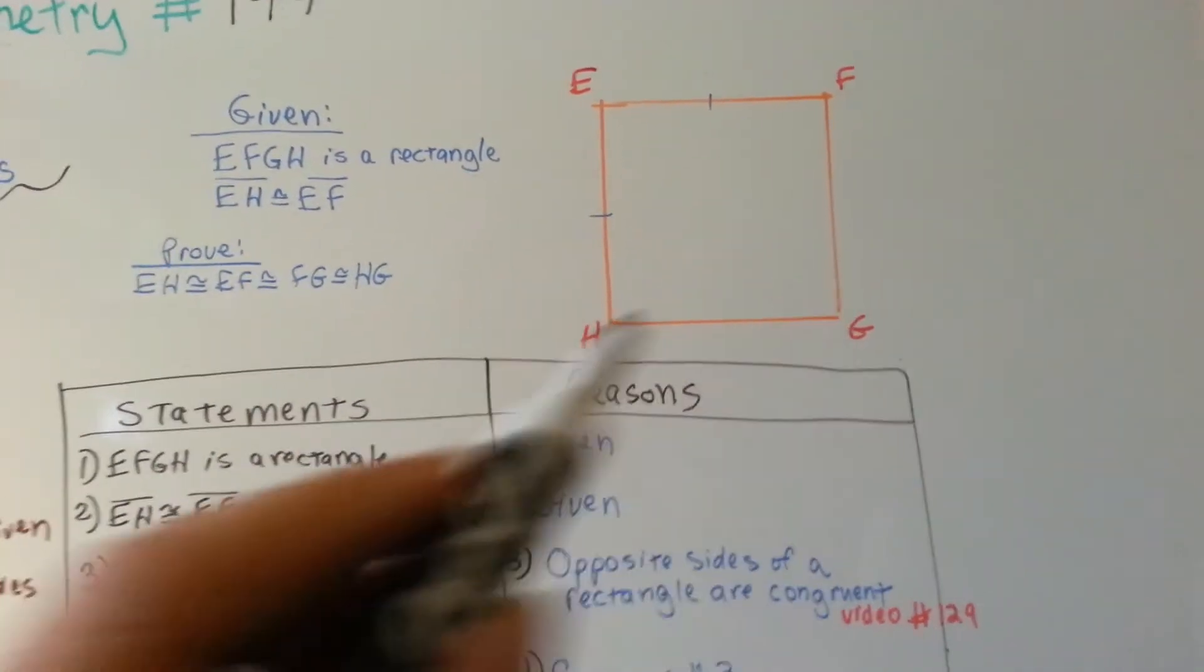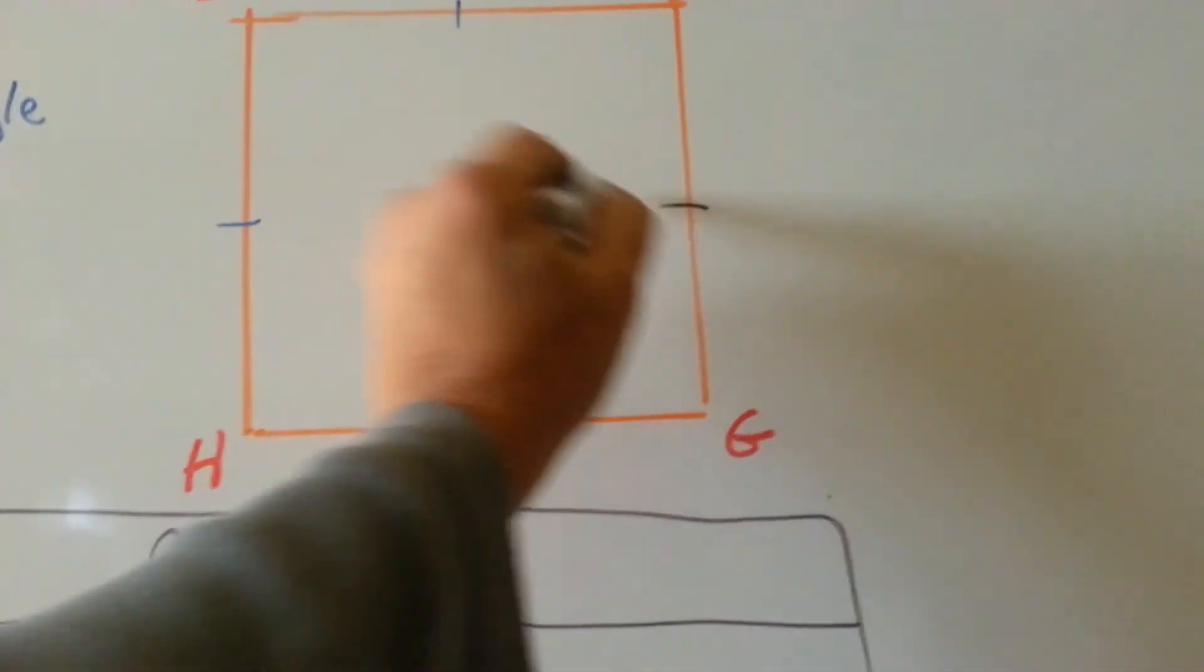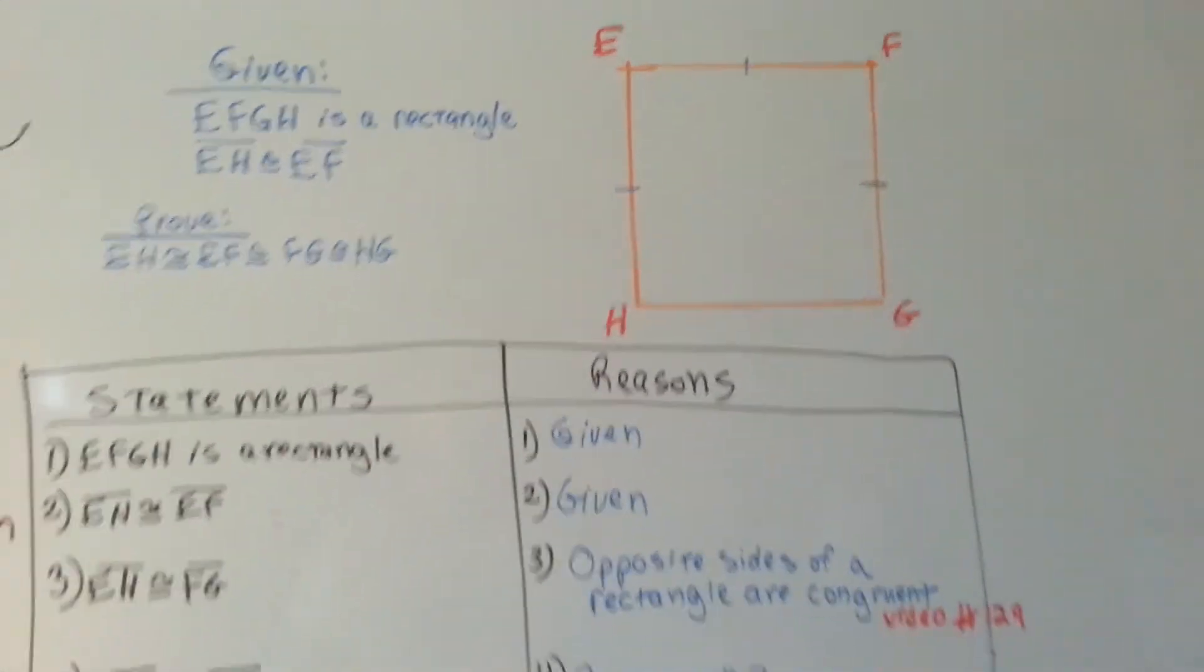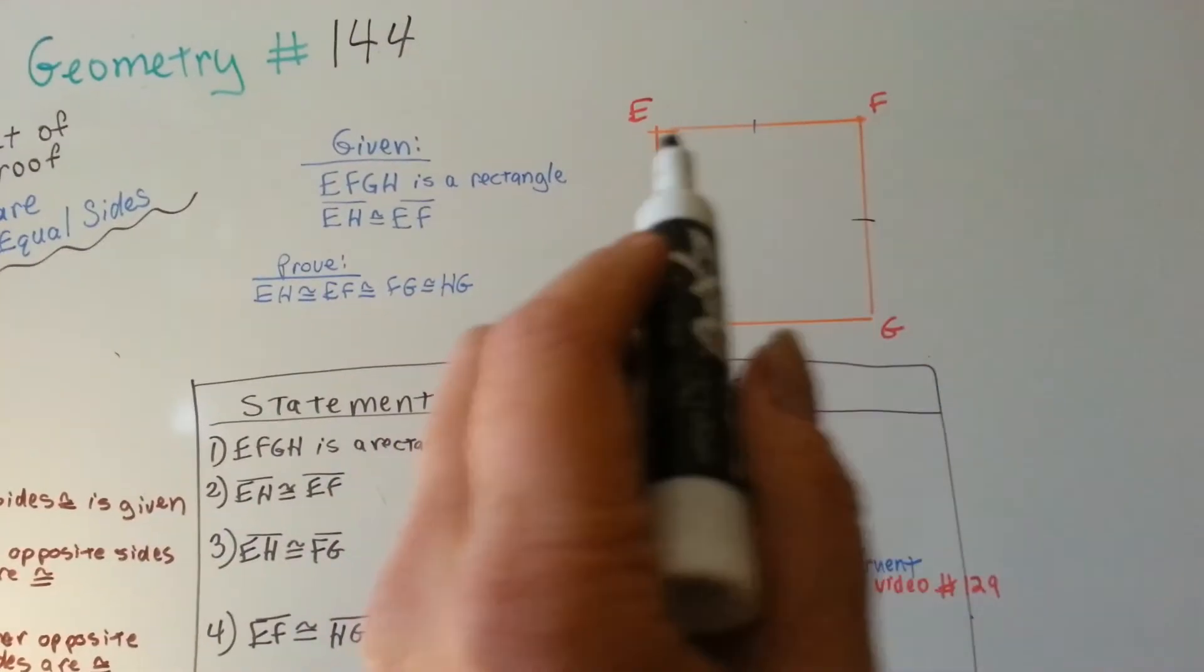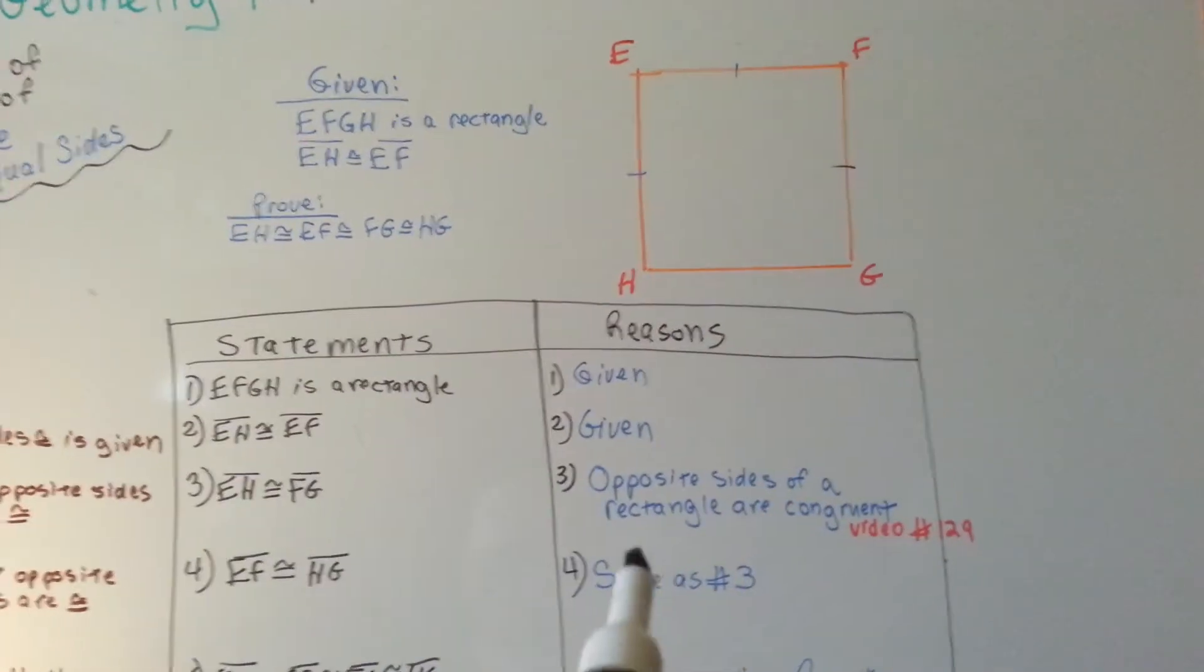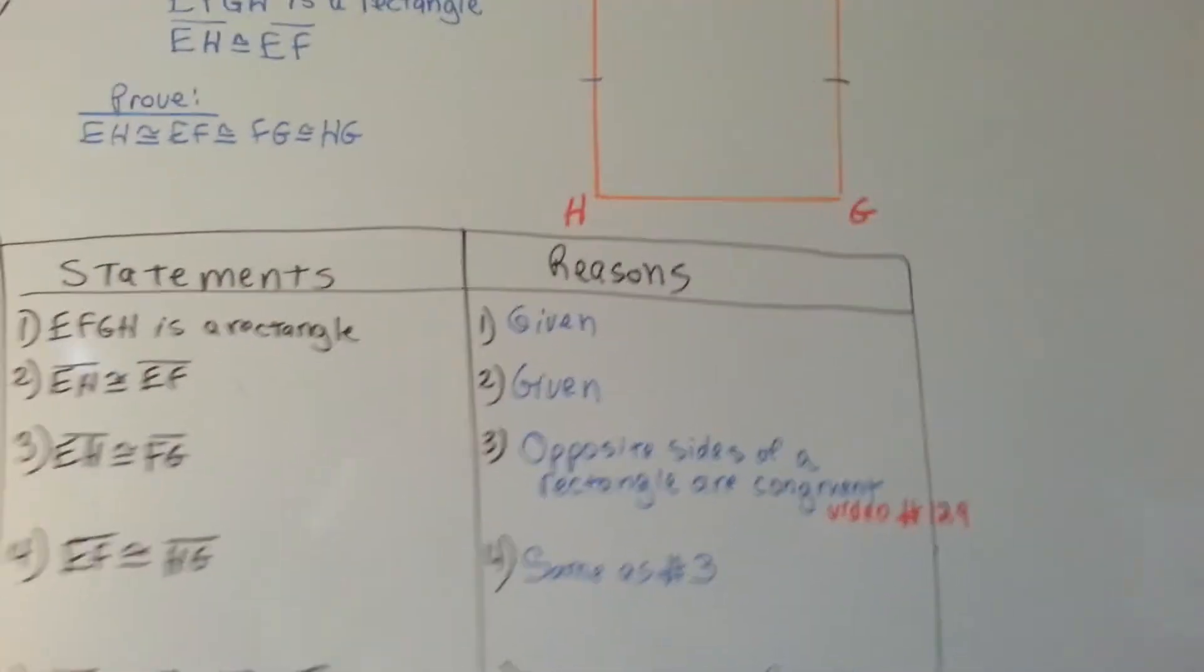So, now we've got these opposite sides are congruent. We can say, okay, now we've got that guy congruent. Now we can see that EF is congruent to HG. Why? Same reason. Opposite sides are congruent.